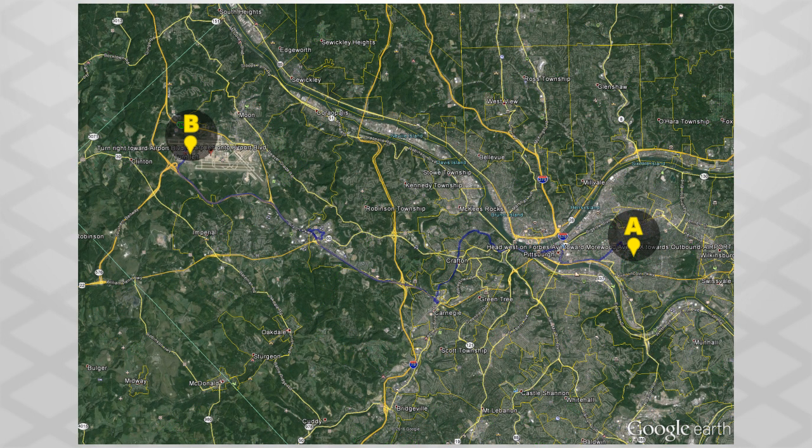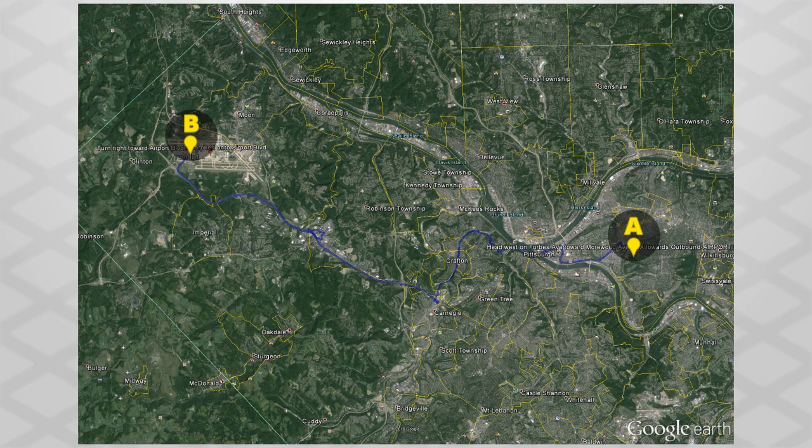Highways and streets that buses do not travel along are also not helpful, since our goal is to find a bus route, so you might choose to exclude those. Names of neighborhoods are also not important for this task.